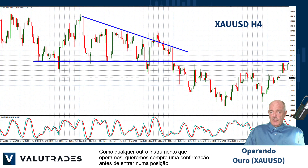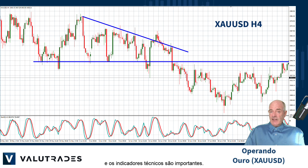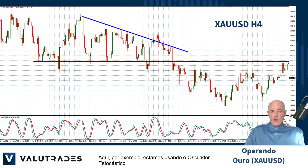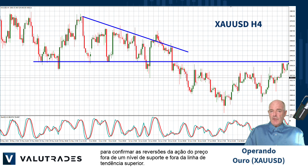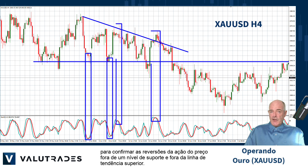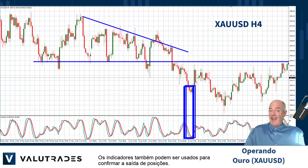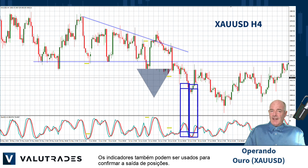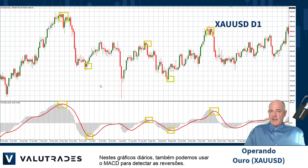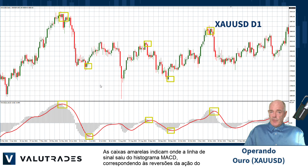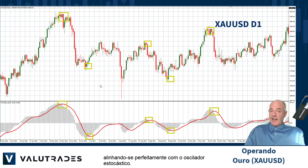Like any other instrument we trade, we always want confirmation before entering a position, and technical indicators are important. Here, for example, we are using the stochastic oscillator to confirm the reversals of price action off a level of support and off the upper trend line. The indicators can also be used to confirm the exiting of positions as well. In these daily charts, we can also use MACD to spot reversals. The yellow boxes indicate where the signal line left the MACD histogram, corresponding with price action reversals aligning perfectly.